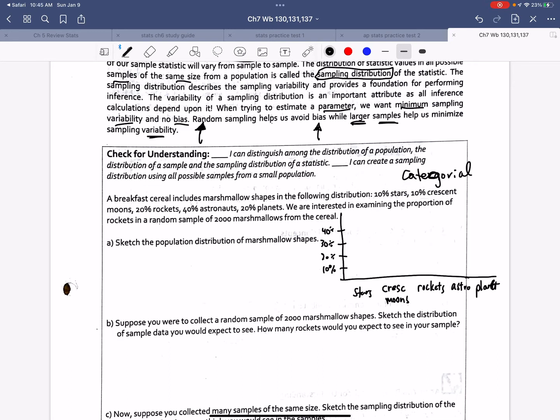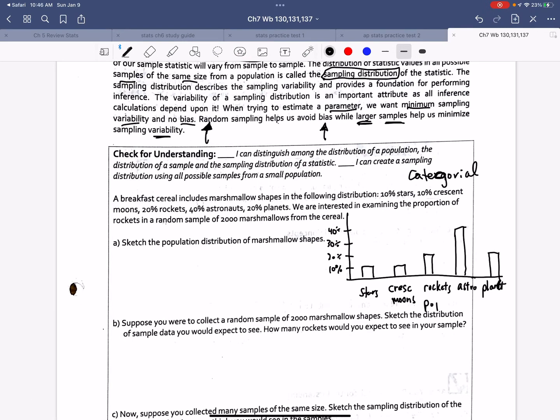Stars are 10%. Crescents, 10%. Rockets, 20%. Astronauts, 40%. Planets, 20. Sketch a population distribution of the marshmallow shapes. So this is my population distribution. That's all the shapes that the company makes. That's the distribution.